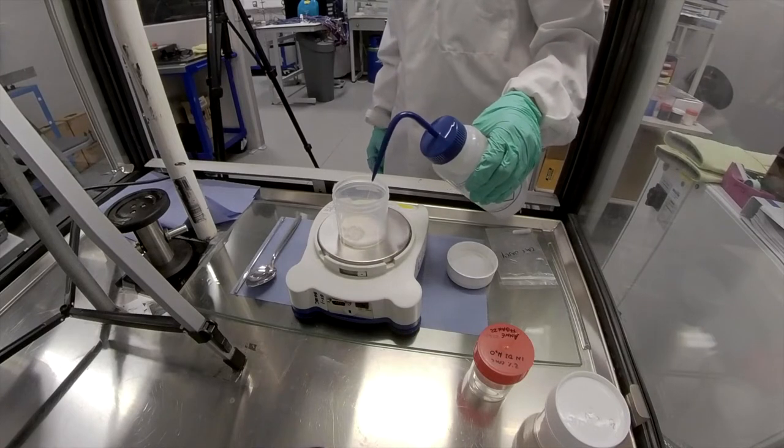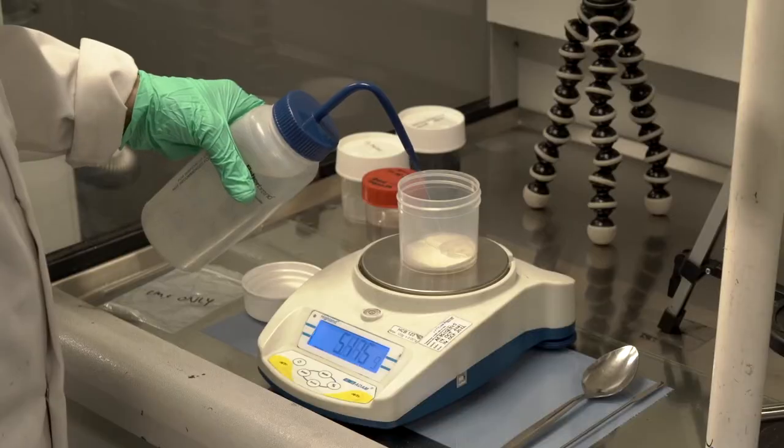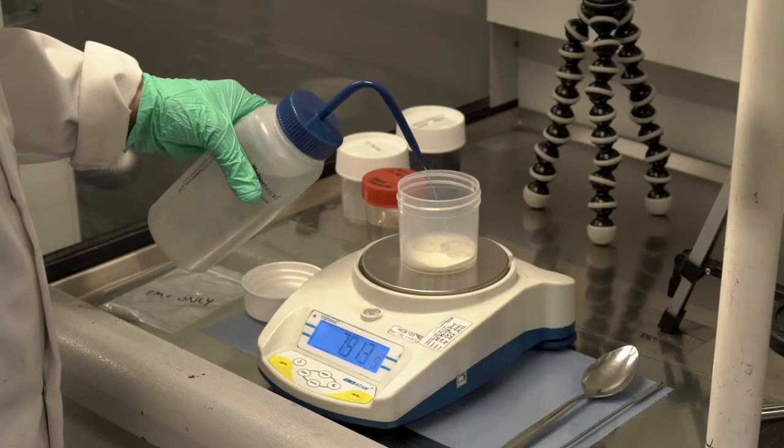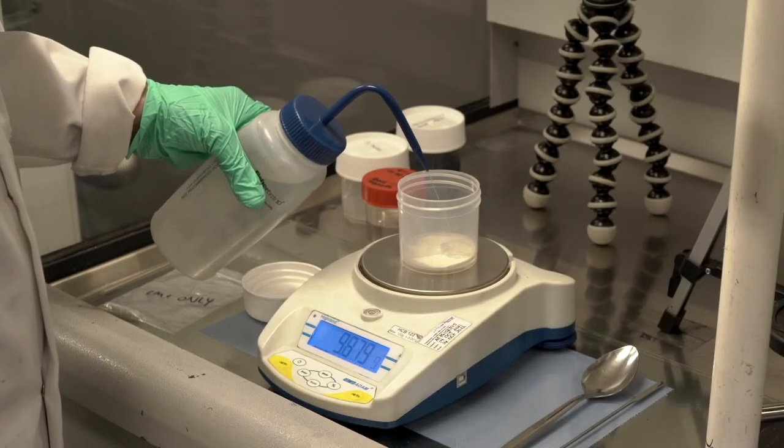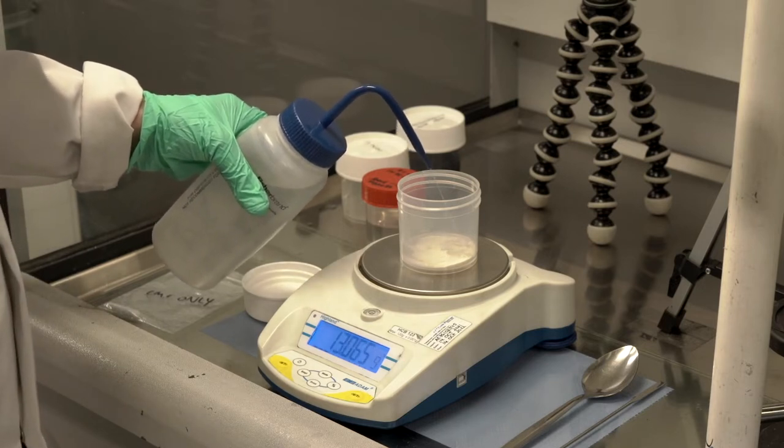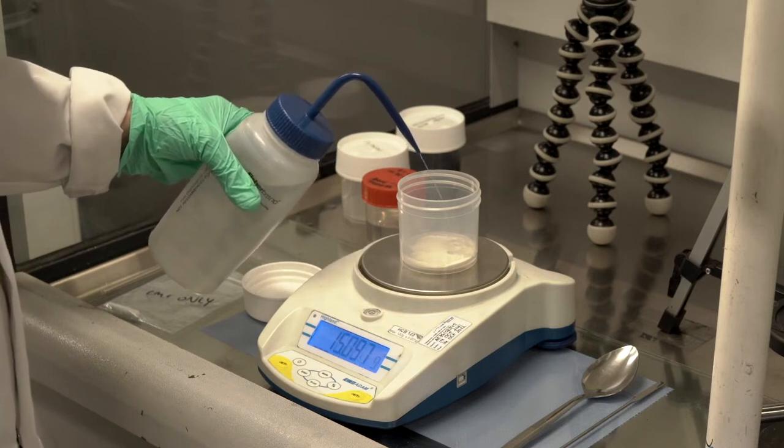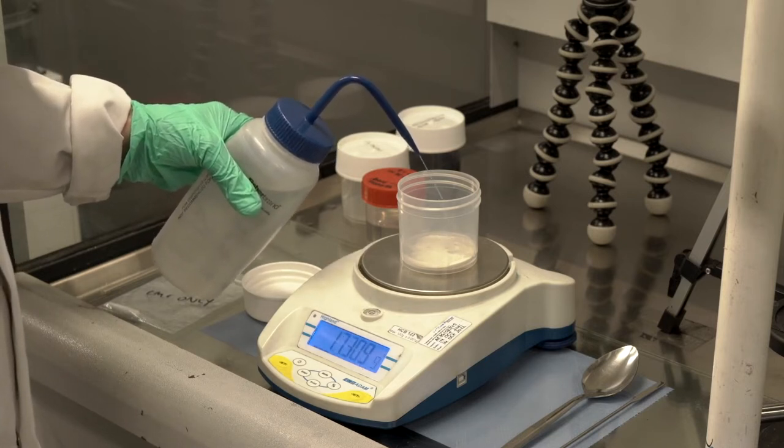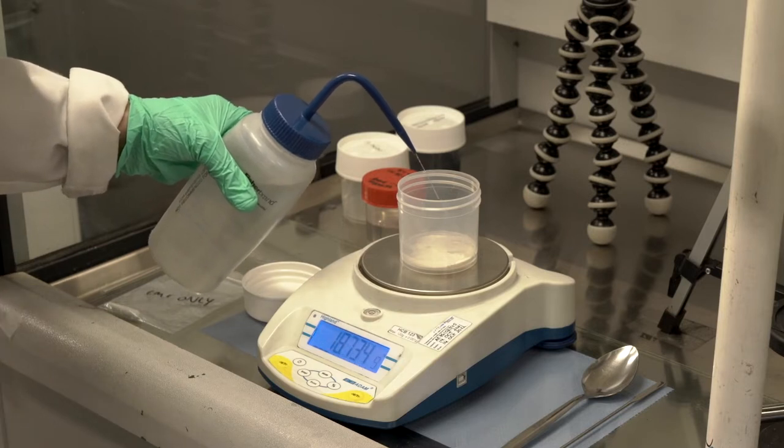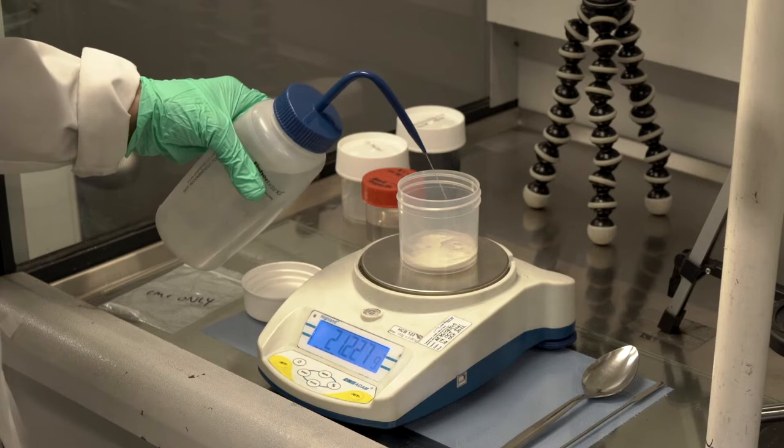Now, to mix this, I generally use a magnetic stirrer, though any mixing method should work. I might put some heat up to 80 or 100 degrees Celsius while it stirs, and I might leave it to stir overnight. But truthfully, the only thing that will really give me a homogenous CMC solution is time.